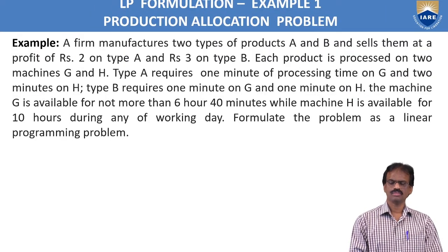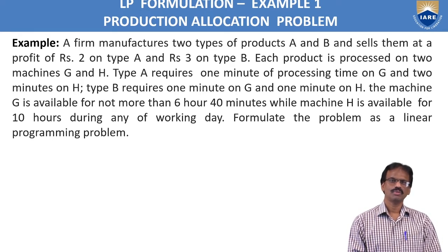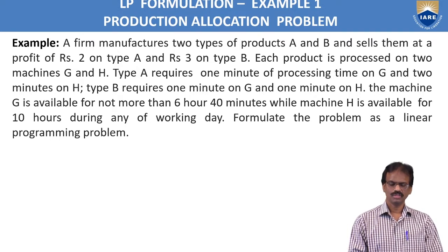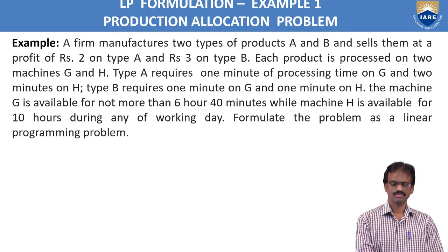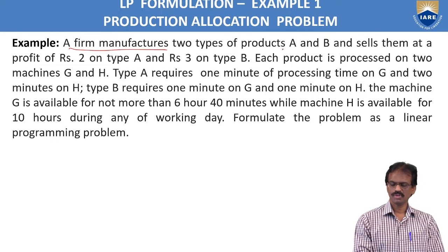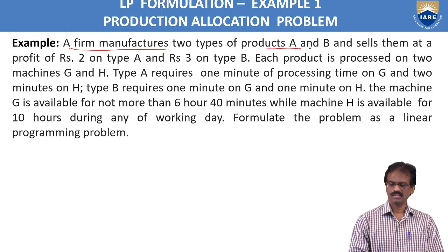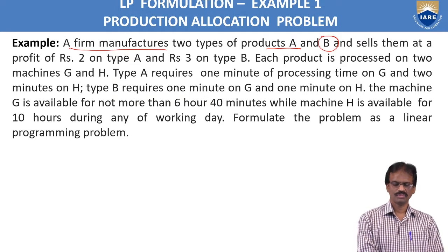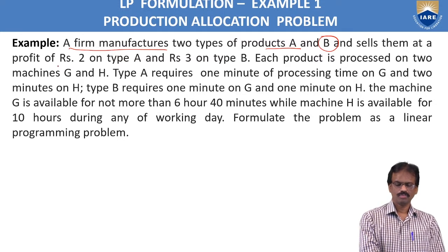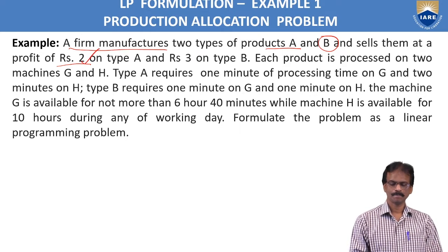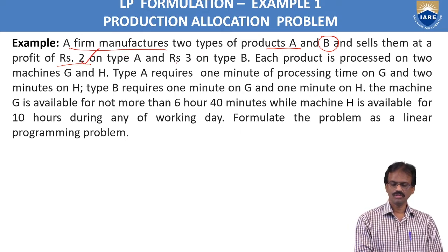These are the six phases to convert real world problems into formulated models, including linear programming models — testing those variables and objectives, validating them, then implementing the solutions. Now we will see one example of how to convert a real world problem into an LP model. A firm manufactures two types of products: product A and product B. It sells them at a profit of 2 rupees per piece on type A and 3 rupees per piece on type B.